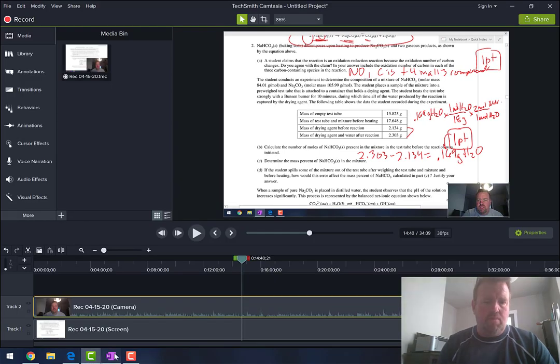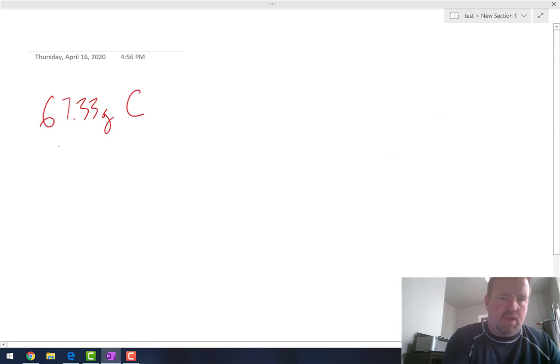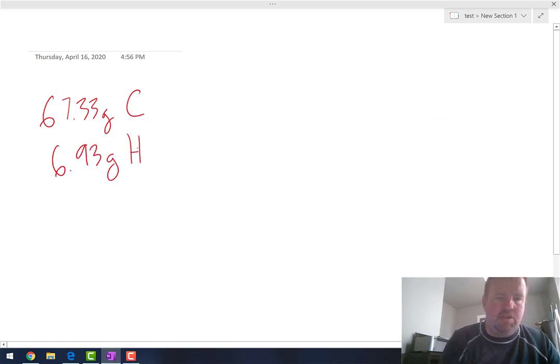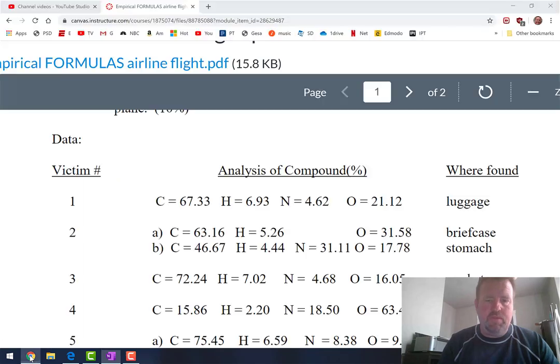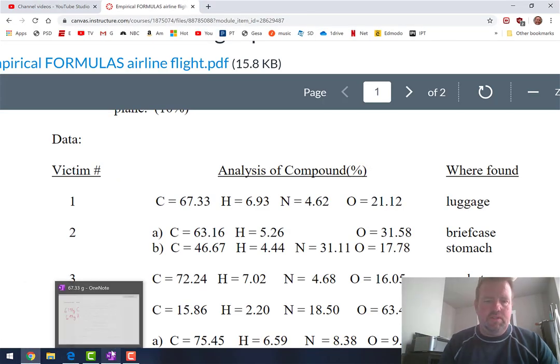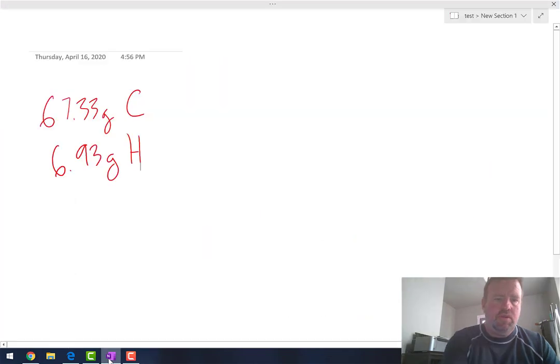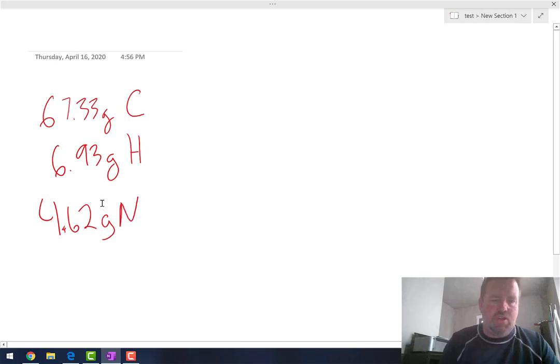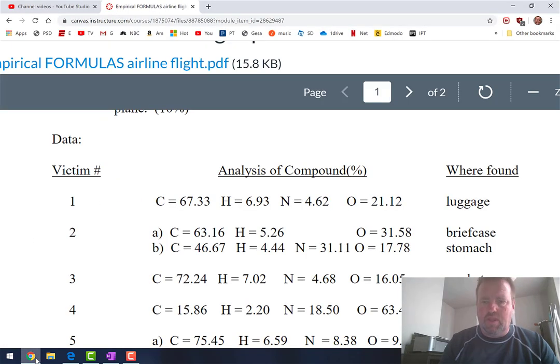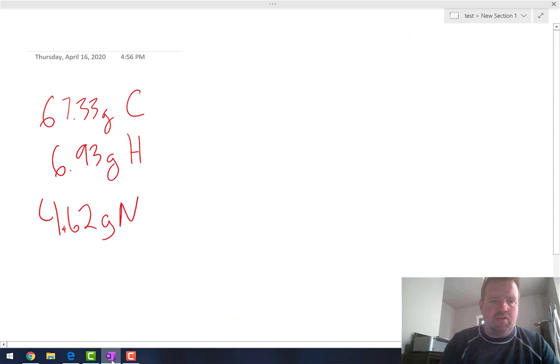So let's go back here to 6.93, again, grams, not percent, of hydrogen. And then nitrogen is 4.62, so 4.62 grams of nitrogen. And then the last one is 21.12, so 21.12 grams of oxygen.